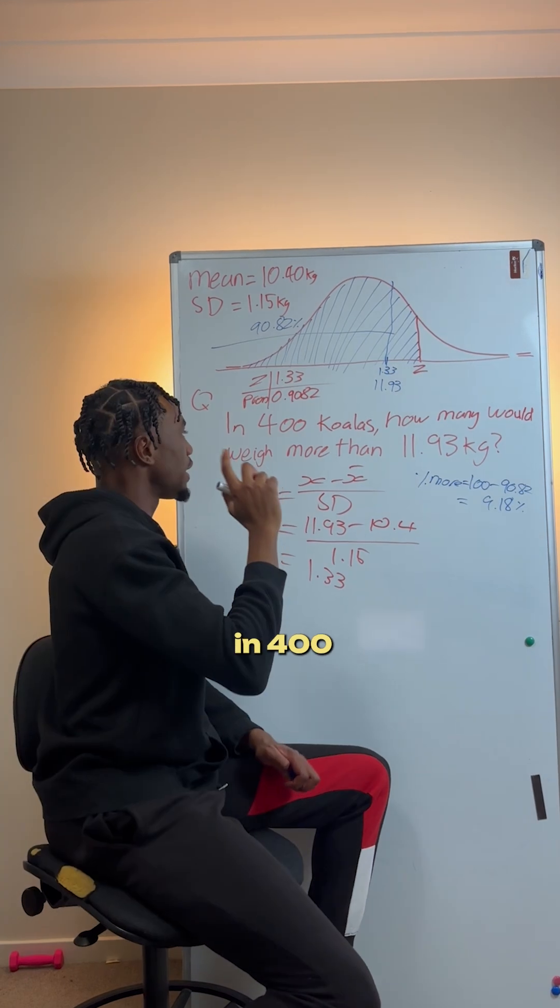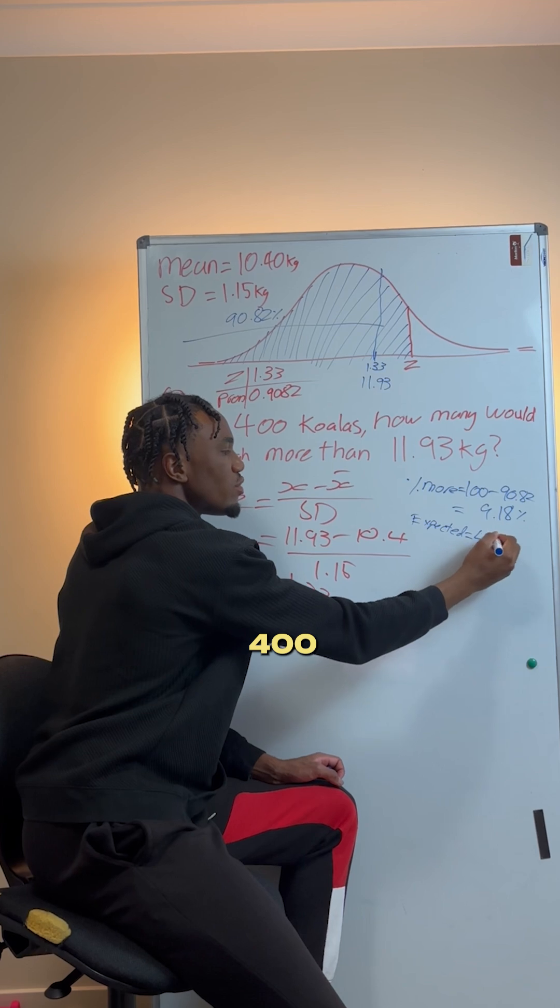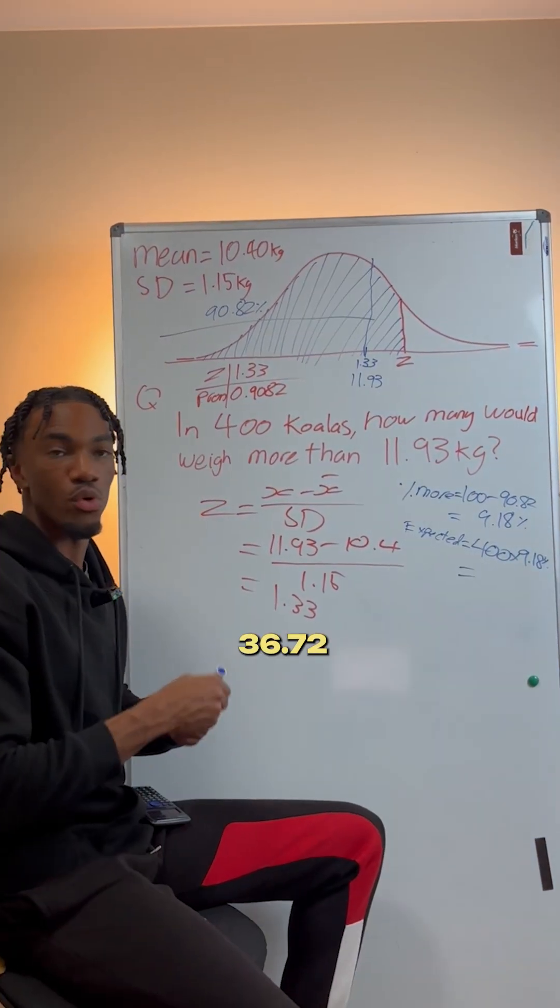And then we're not finished. In 400 koalas, how many would expect to weigh more? Expected equals 400 times 9.18%, and that equals 36.72.